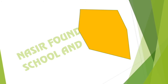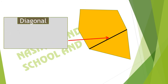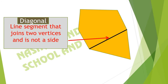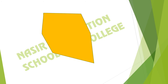In the polygon, there is a line segment joining two vertices. This is called the diagonal. A diagonal is the line segment that joins two vertices and it is not a side. The line segment that joins two vertices and is not a side is called the diagonal.